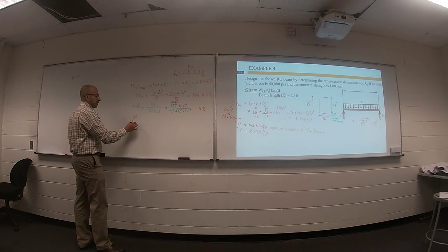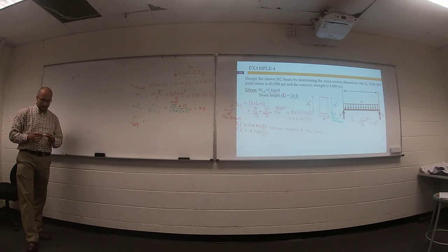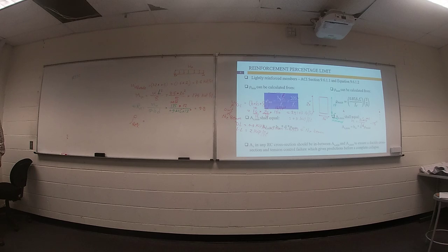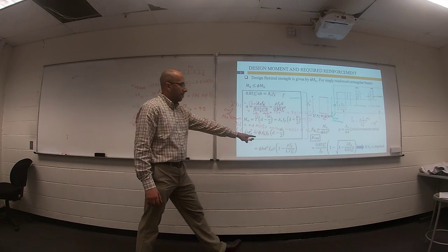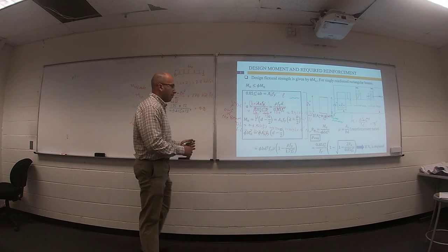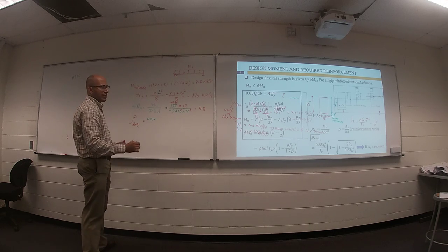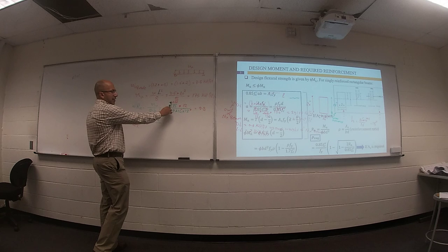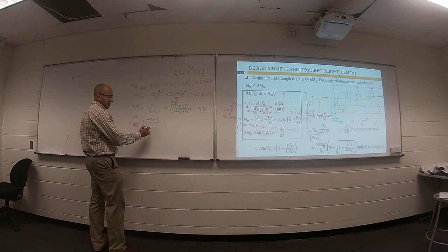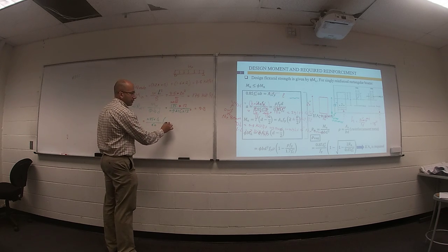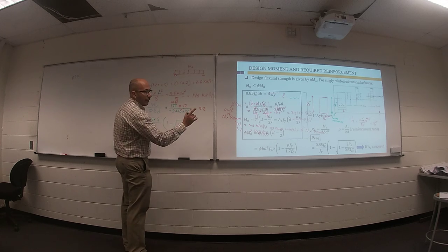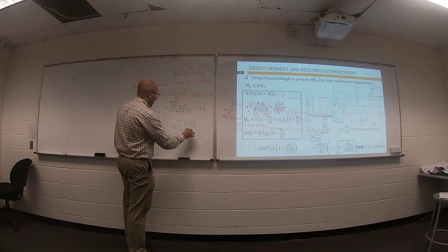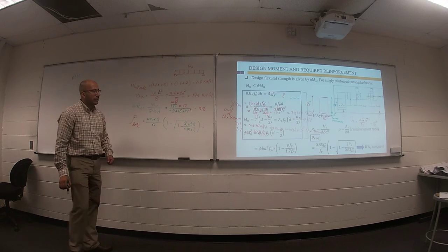What is the rho required? Rho required equals - I'm done with Rn. Rho required equals 0.85. Anybody remember what is the value of f'c? 4000. I would like to make everything in kips, divided by fy 60,000, times 1 minus square root of 1 minus 2Rn. Your Rn is 9.8 divided by 0.85 f'c which is 4. I can get my rho required.